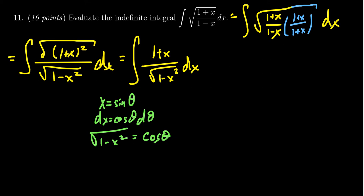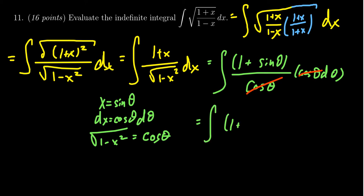And so then I can rewrite my function. You're going to get 1 plus x, which is x is sine, this sits on top of the square root of 1 minus x squared, which then becomes a cosine, and then your dx is a cosine theta d theta. Notice in this situation, you have a cosine theta here cancels with a cosine theta. And so this will simplify just to be the integral of 1 plus sine theta d theta, which is pretty nice.